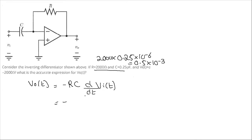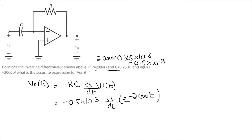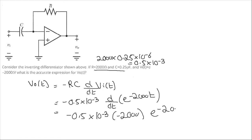In place of RC I can substitute this value. So replacing RC and taking the derivative of the input e to the power minus 2000t, we get minus 0.5 multiplied by 10 to the power minus 3, and the derivative gives minus 2000 times e to the power minus 2000t.